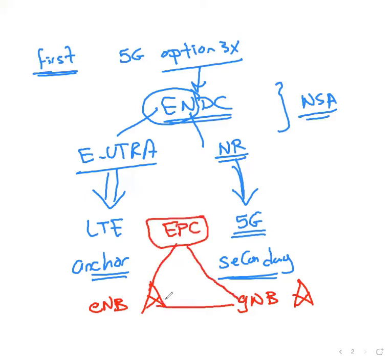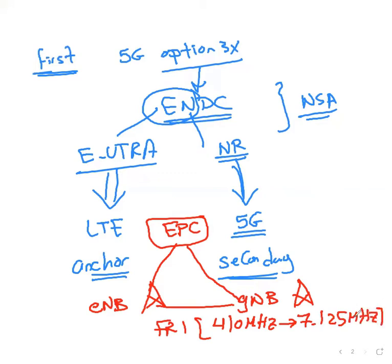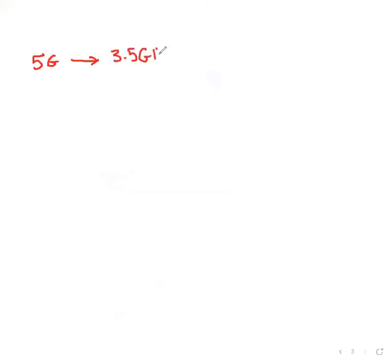According to 3GPP standards, carrier aggregation can be activated for the secondary cell group. Today's 5G deployment at sub-6 GHz frequency — also called Frequency Range 1, or FR1, covering 410 MHz up to 7.125 GHz — combines multiple LTE carriers with typically one NR carrier. The vast majority of these networks worldwide use a 3.5 GHz carrier with a bandwidth of up to 100 MHz and also use 4x4 MIMO.